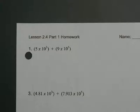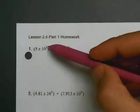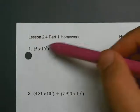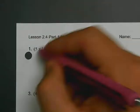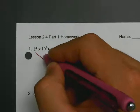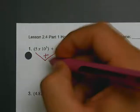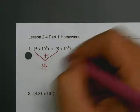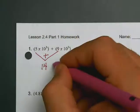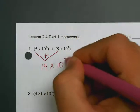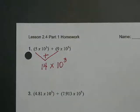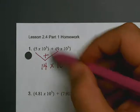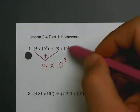So your first step is to always ask yourself, are the exponents the same? These exponents are the same. So if your exponents are the same, you're going to add your first terms. 5 plus 9 is 14. And then you're going to drop your base and your exponent. It just remains the same. So say times 10 to the third power.